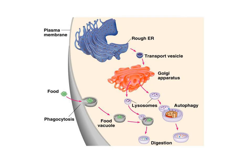In a diagram, vacuoles are represented as little circles with nothing in them. Lysosomes are also represented by little circles; however, they will have little black dots in them to represent the hydrolytic enzymes.